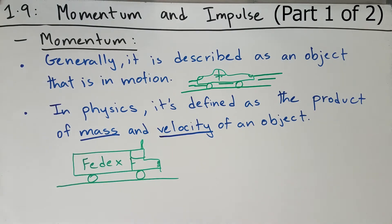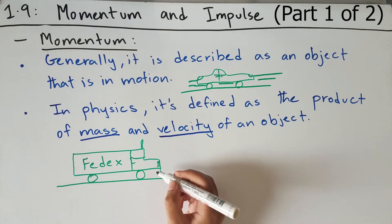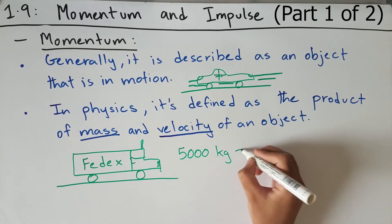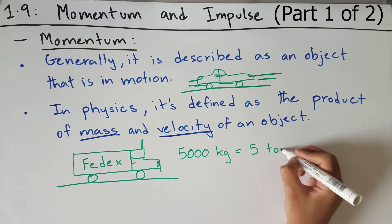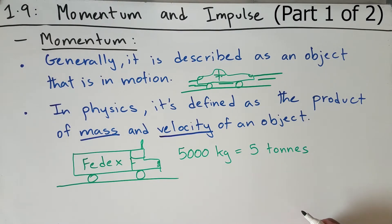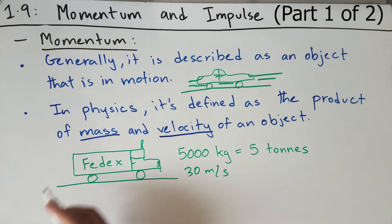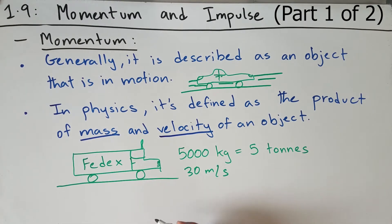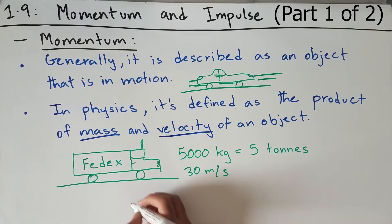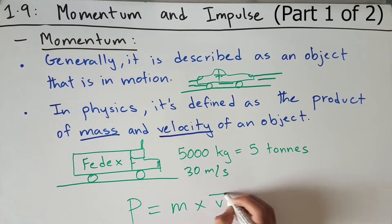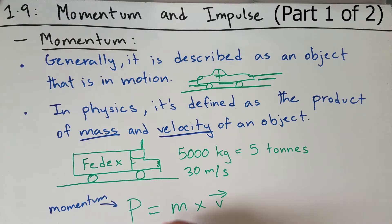So let's say if we had this truck, which had a mass of about 5,000 kilograms, which is equal to 5 metric tons. Then this truck, let's say, also had a velocity of 30 meters per second. Then we can find the momentum of this truck using the formula P equals mass times velocity, where the letter P means momentum.